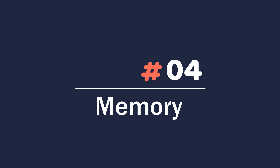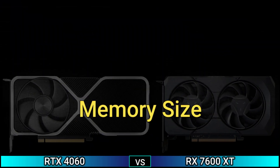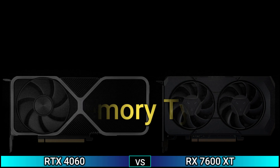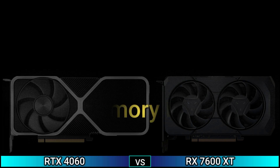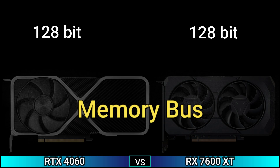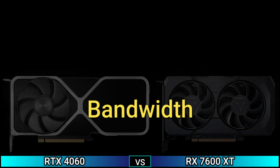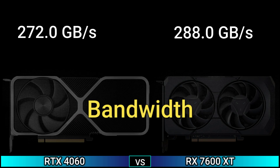Memory size: 8 GB and 16 GB. Memory type: GDDR6. Memory bus: 128-bit. Bandwidth: 272.0 GB/s and 288.0 GB/s.